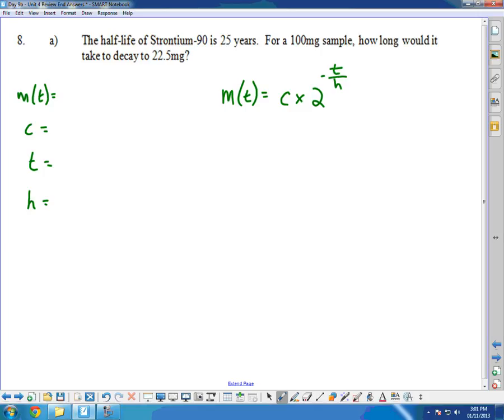It says the half-life is 25 years, so that's obviously here. A 100 milligram sample is the beginning, and it's decayed now to a certain mass after a certain time at 22.5, and we need to figure out how long it takes. So we go off and plug in this information: 22.5 equals 100 times 2 to the negative T over 25.